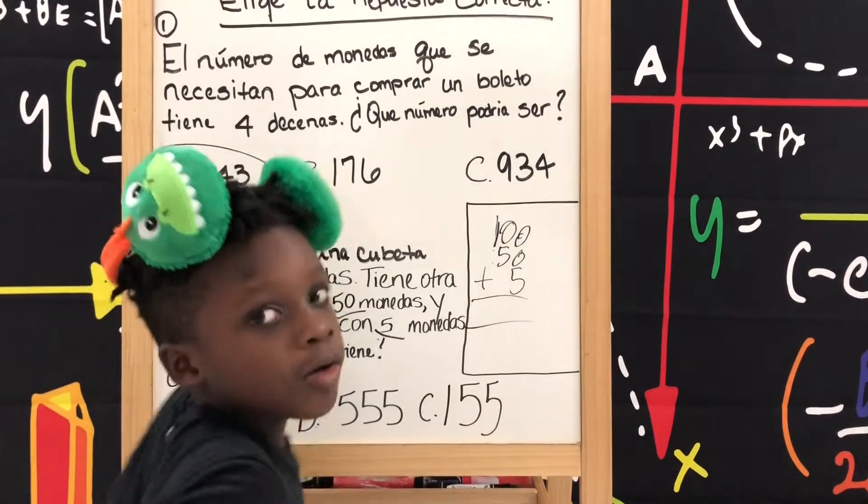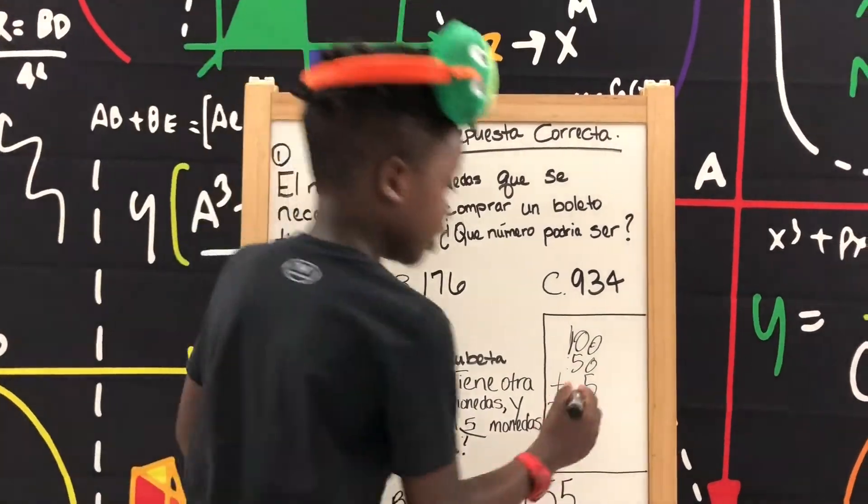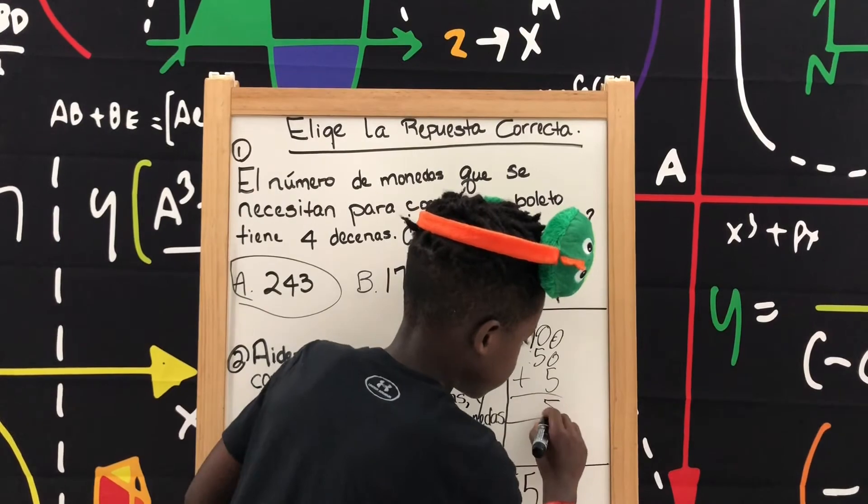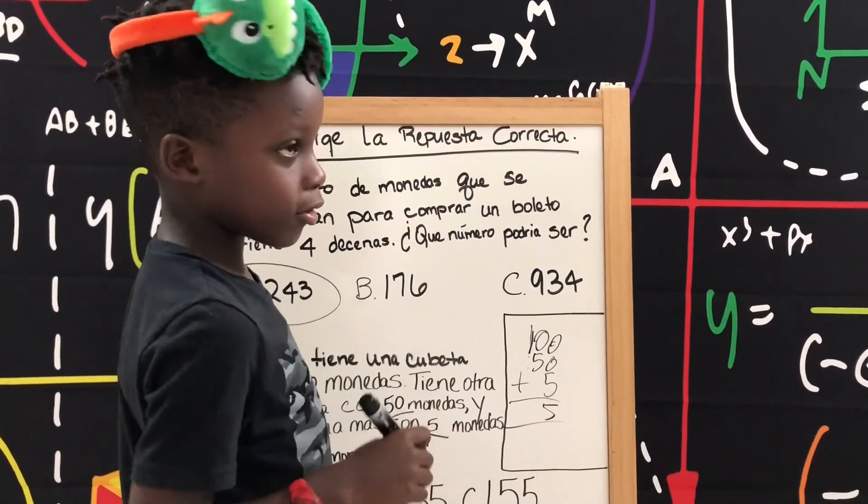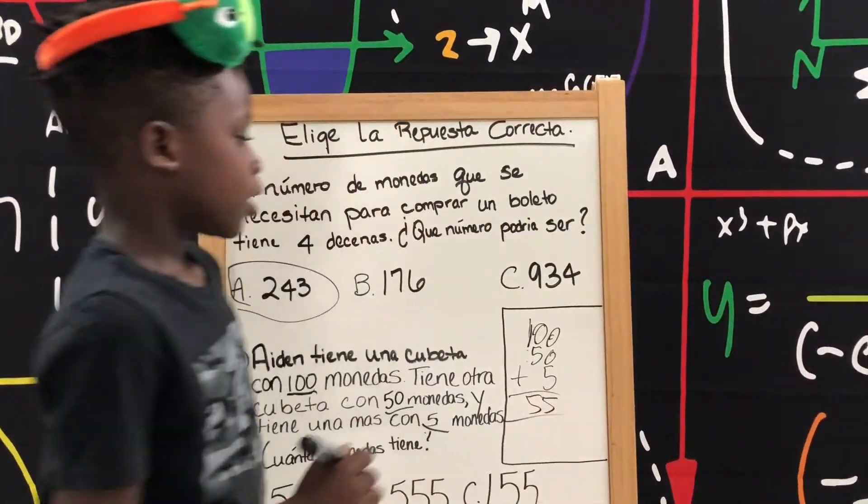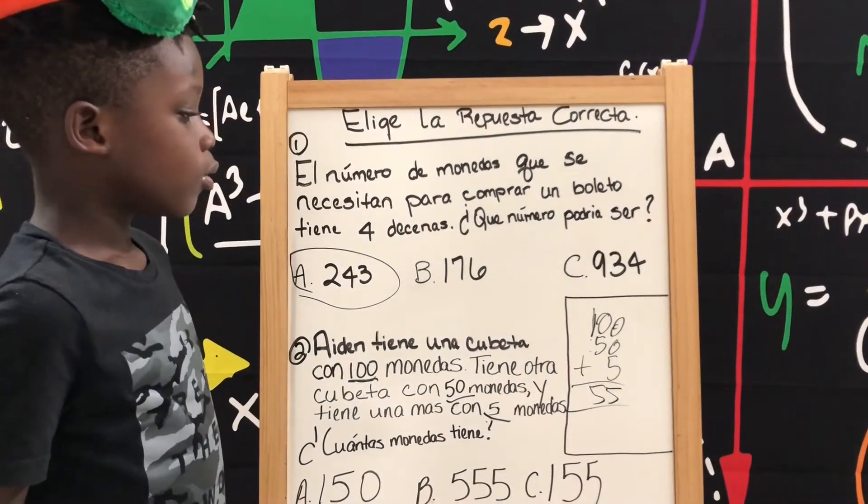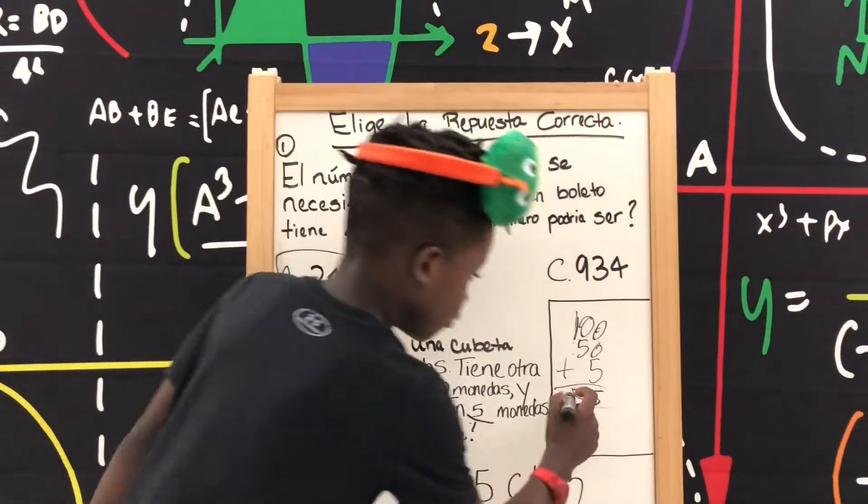Cinco más cero, más cero, más otra cero es igual a cinco. Cinco más cero, más cero es igual a cinco. Uno más cero, uno y otra cero es igual uno.